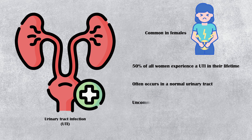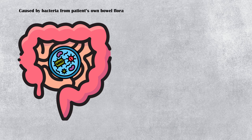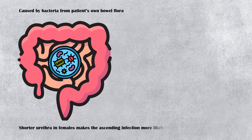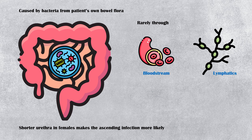The condition is uncommon in males and children. If diagnosed, it is usually in an abnormal urinary tract. Urinary tract infection is commonly caused by a person's own bowel flora, which ascends the urethra. The shorter urethra in females makes ascending infection more likely. The infection rarely transmits through the bloodstream and lymphatics.